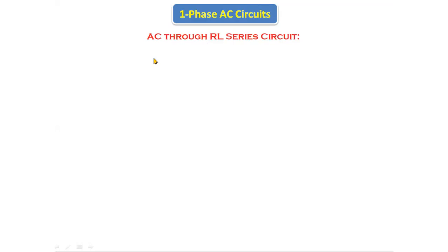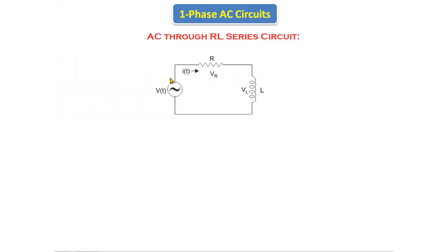Today we are going to discuss about the behavior of AC through the RL series circuit — if we give the AC supply to the RL series circuit, how the behavior is, and what is the impedance and what is the phase angle difference between voltage and current. So if we take the circuit, this is the single phase AC supply we are giving to the RL series circuit. The circuit consists of a resistor and inductor both connected in series, so R and L are connected in series — that's why it is called the RL series circuit.